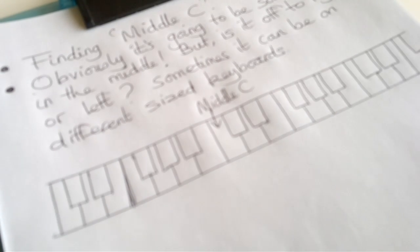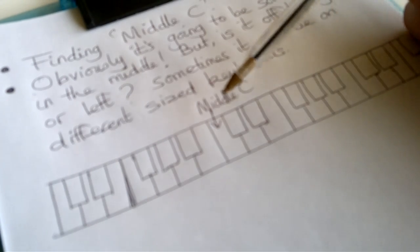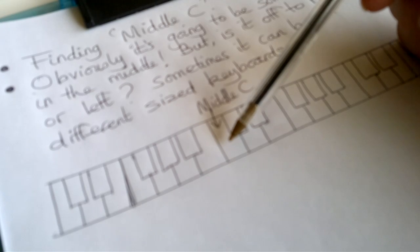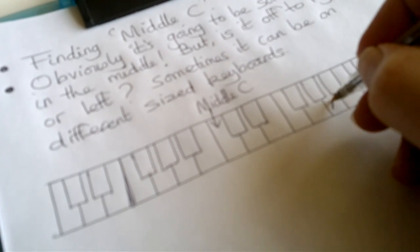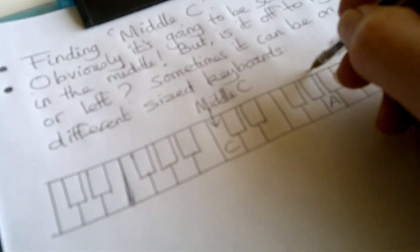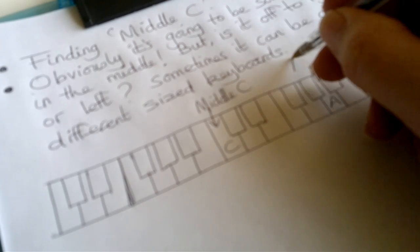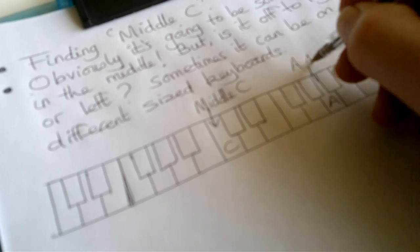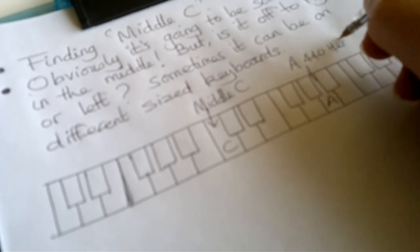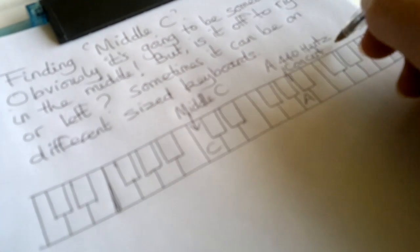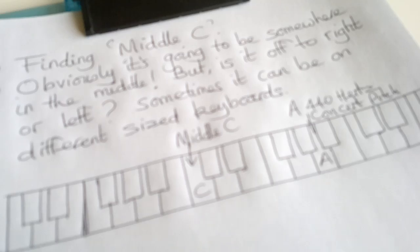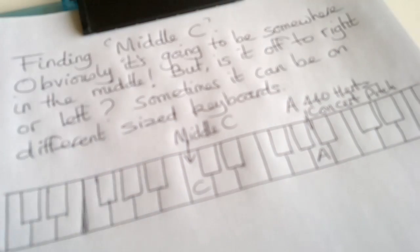Now that we've found middle C, we can go alphabetically: C, D, E, F, G, A — and that A is the 440 hertz concert pitch. Now we'll leave this discussion of middle C and the A anchor point and move on further to the chromatic scale.